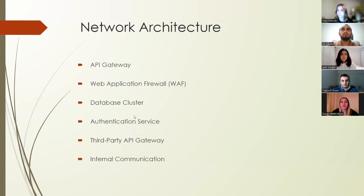Let's look at the network architecture. This includes several important parts like the API gateway, which is the main point for handling data requests and the web application firewall for security. We also have a database cluster for storing all our data, an authentication service for secure user login, and a third-party API gateway for connecting with external services. All these parts work together to make sure Filmfolio runs smoothly and securely.